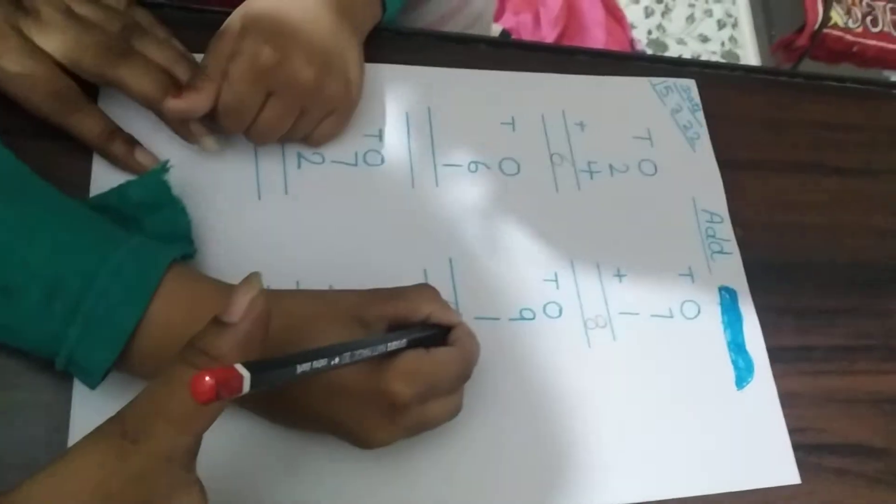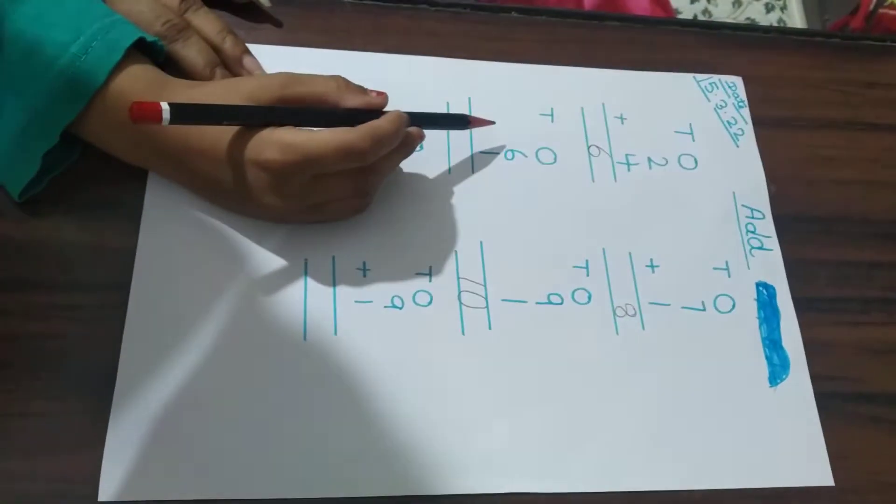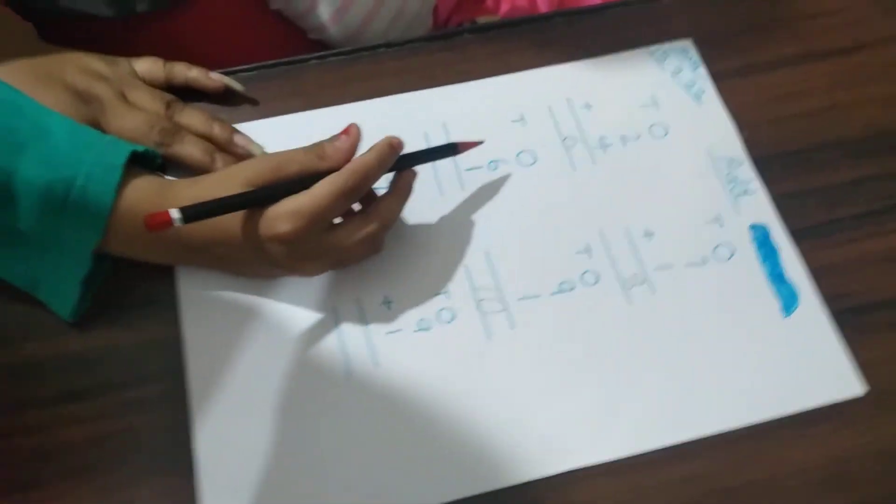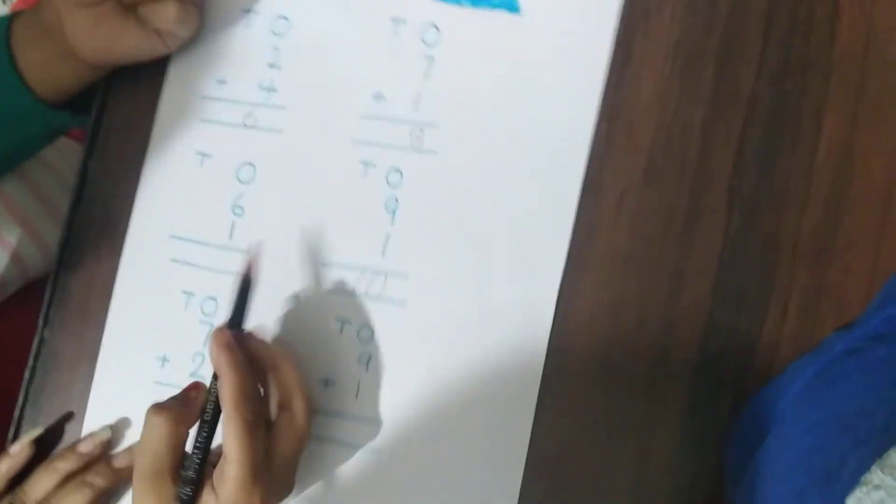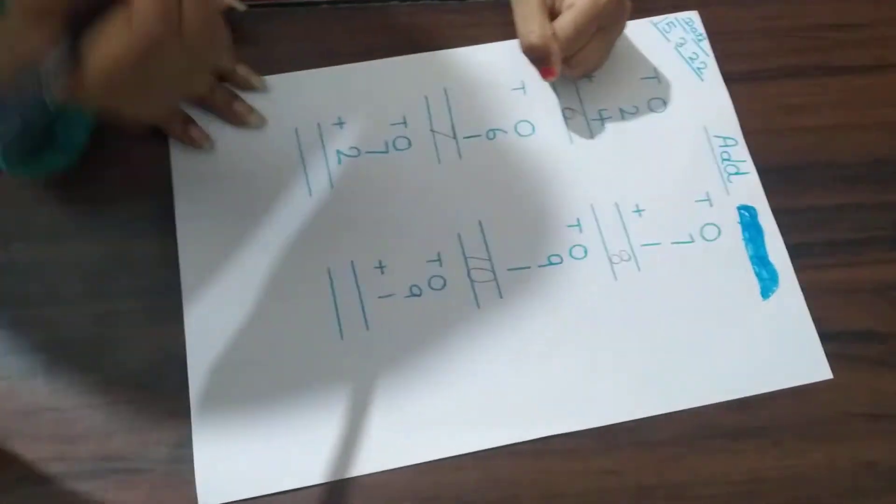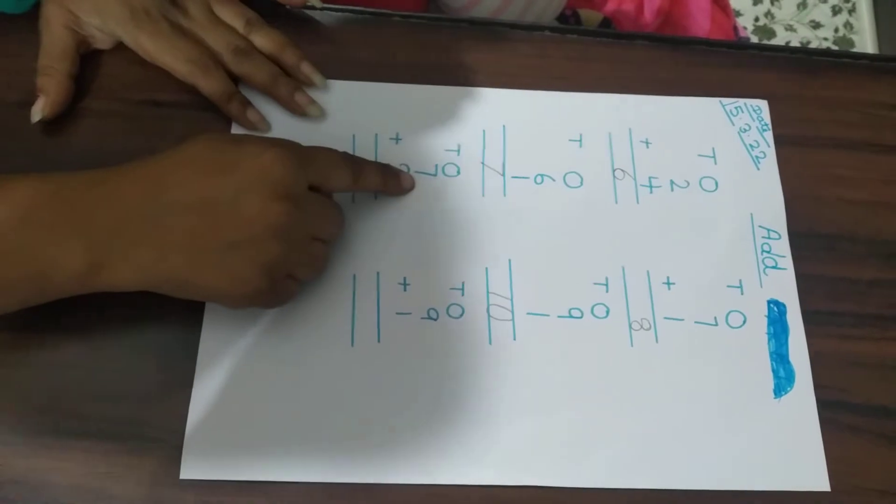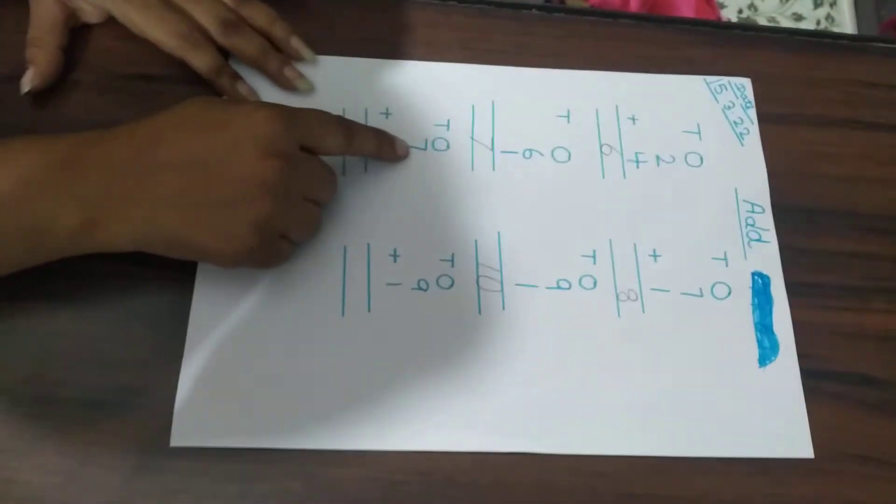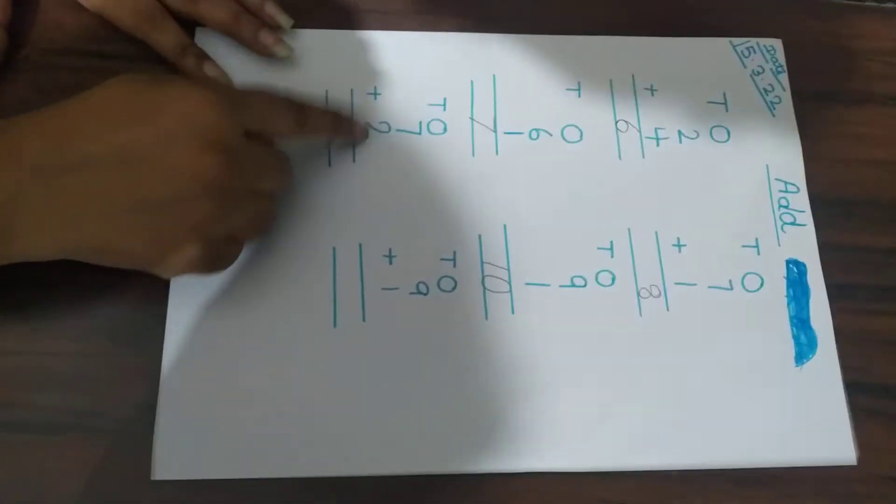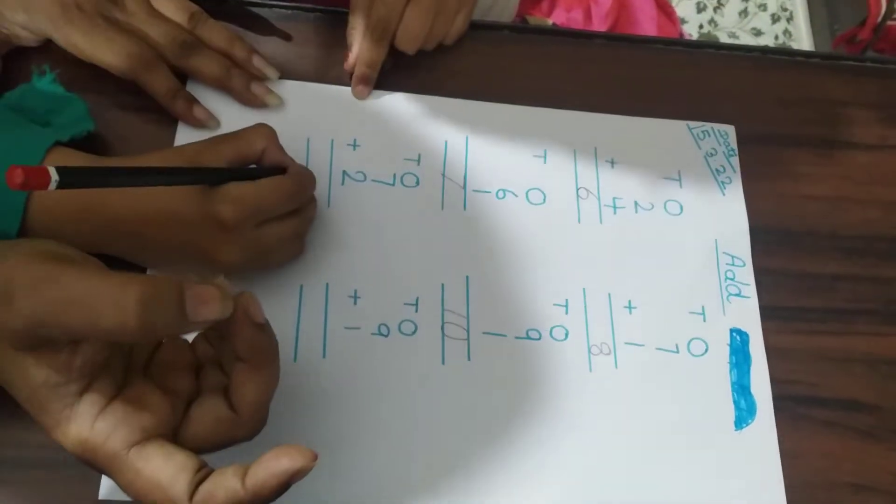Now, you write Agni or Pakhi. 6 in your mind and 1 in your finger. 7. He is doing. Oh, sorry. 7 in your mind, 2 in your finger. 8, 9. Very good.